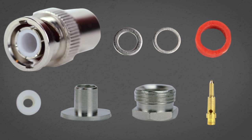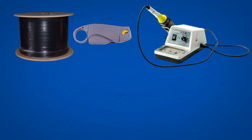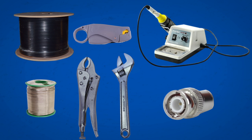For this installation you will need RG58 cable, a coax stripper, soldering iron and solder, a couple of wrenches, and the BNC connector.